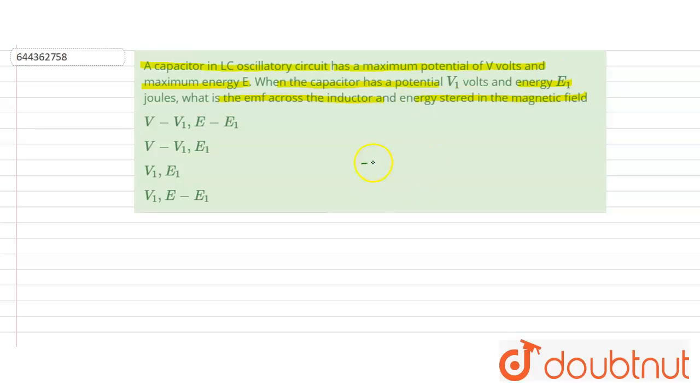Let this be the capacitor and there is an inductor. This is the circuit. This is C, this is L. And it is said that the potential difference across the capacitor is V1. So if this is 0, then it will be V1.